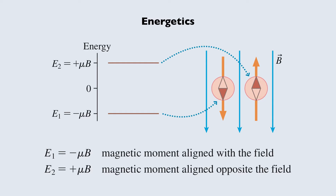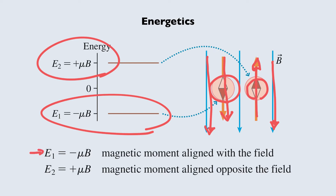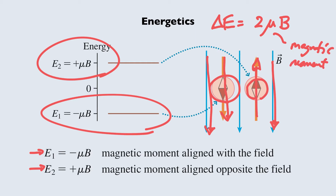Let's look at the energetics. If you have a dipole whose dipole moment is lined up with the magnetic field, that is a lower energy state than if the dipole moment is lined up opposite the field - that's a higher energy state. If the magnetic moment is aligned with the field, the energy is negative mu times B. If it's lined up opposite the field, it's positive mu times B. So there's a difference in energy of 2 times mu times B between those two states, where mu is the value of the magnetic moment, whether of a bar magnet or an individual electron spin.